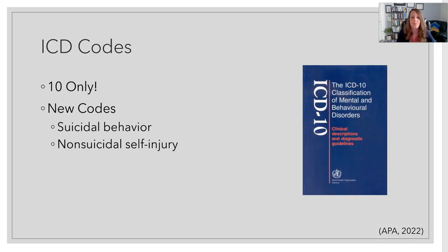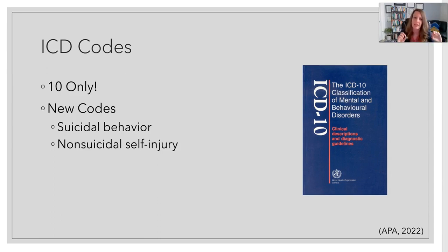In the DSM-5, both ICD-9 and ICD-10 codes were listed because when the DSM-5 was released, the ICD-9 was still in use in the US. Now that the TR is out and the ICD-10 is well underway, they've moved to just those ICD-10 codes. Additionally, there are two new codes — one for suicidal behavior and one for non-suicidal self-injury.